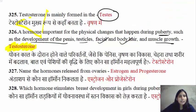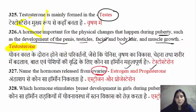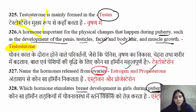The next question is: which hormones are released from the ovaries? Two hormones are released from the ovaries — one is estrogen and the other is progesterone. The hormone which stimulates breast development in puberty is estrogen.